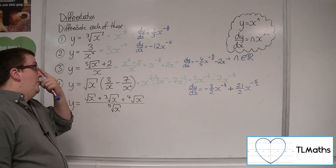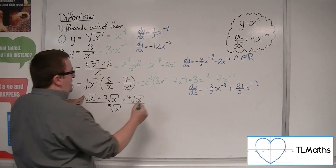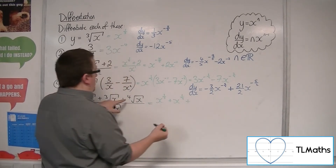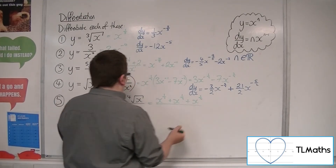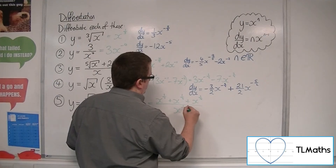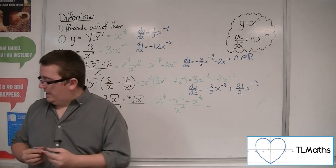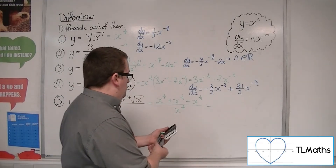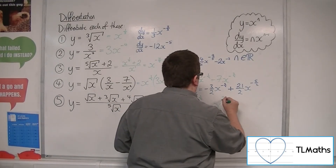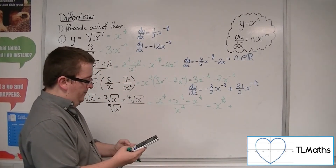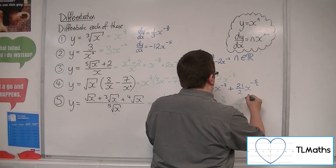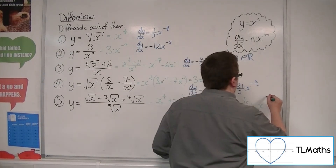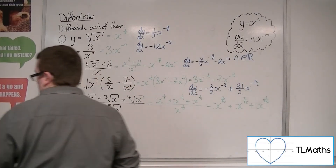Finally, number five. We've got to simplify this fraction. In the numerator we've got x to the half, x to the one third, and x to the quarter, all over x to the one fifth. I'm going to get the calculator ready for this. x to the half over x to the one fifth: one half take away one fifth is three tenths, so x to the three tenths. Then a third take away a fifth gives x to the two fifteenths. And then a quarter take away a fifth gives one over twenty, so x to the one twentieth. Now we're ready to differentiate.